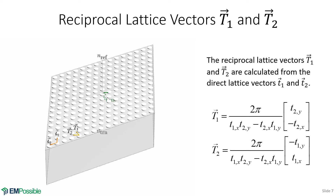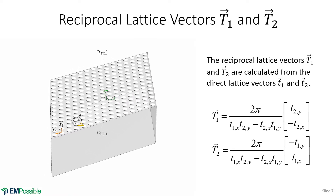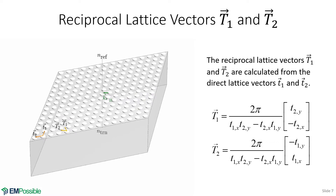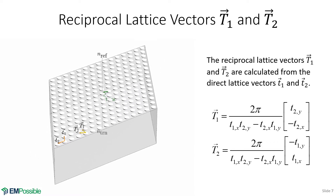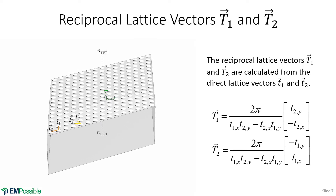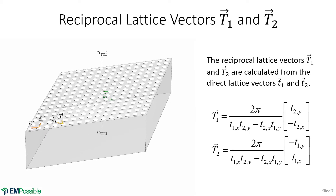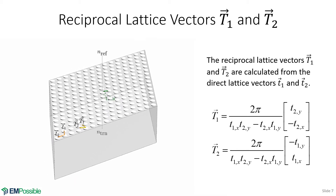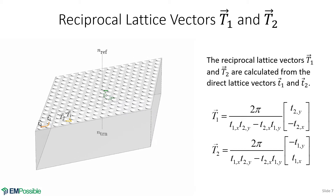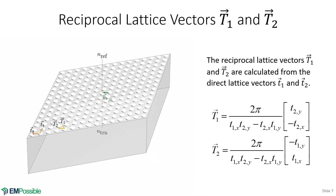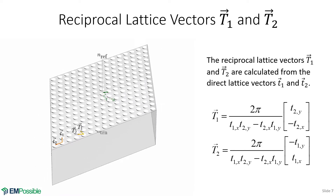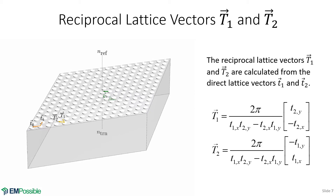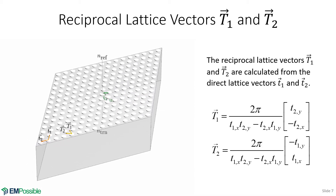At this point, we need our reciprocal lattice vectors, and we calculate these straight from the direct lattice vectors, giving us capital T1 and capital T2, to distinguish them from lowercase t1 and t2, which were the direct lattice vectors. If we're looking at the grating in real space — the direct lattice — the orientation of T1 and T2 may not make much sense, because they're really part of the reciprocal lattice. So don't worry about capital T1 and T2 not pointing from the center of one unit cell to another. They're reciprocal lattice quantities, and we need them for our next step.